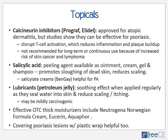Salicylic acid is a good peeling agent available in ointments, creams, gels, and shampoos; it promotes sloughing off of dead skin, reducing scaling. There are also over-the-counter salicylate creams such as Ben-Gay that can be applied to inflamed joints. Even lubricants such as petroleum jelly can be effective — they have a soothing effect and seal water into the skin, reducing scaling and itching. However, petroleum products and coal tars applied to the skin over long-term use have shown to be mildly carcinogenic, so heavy long-term use is discouraged.